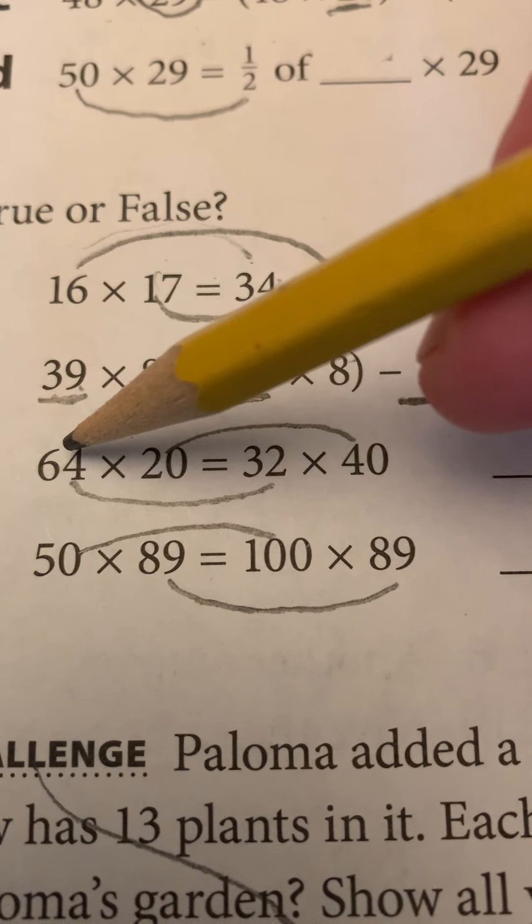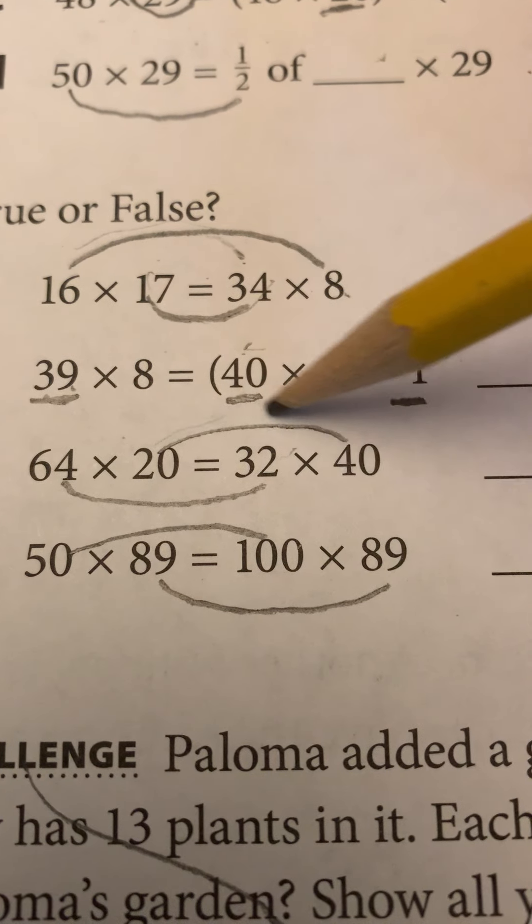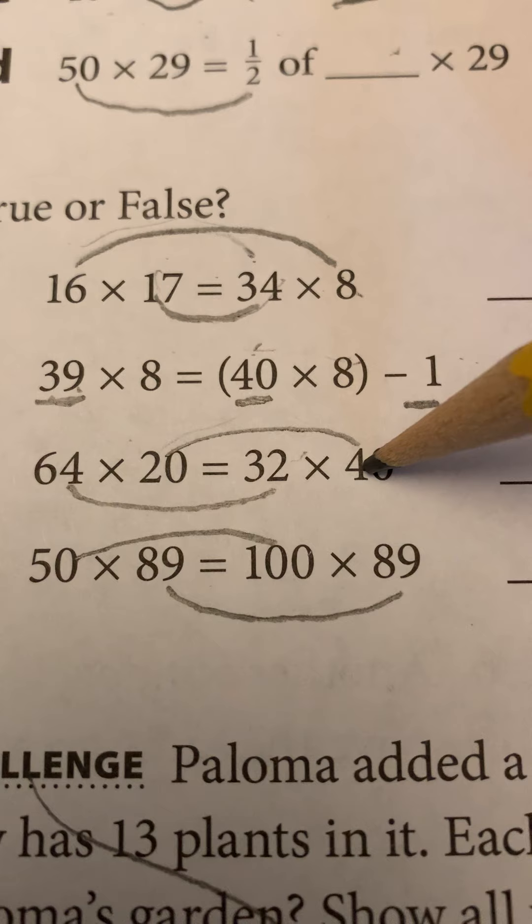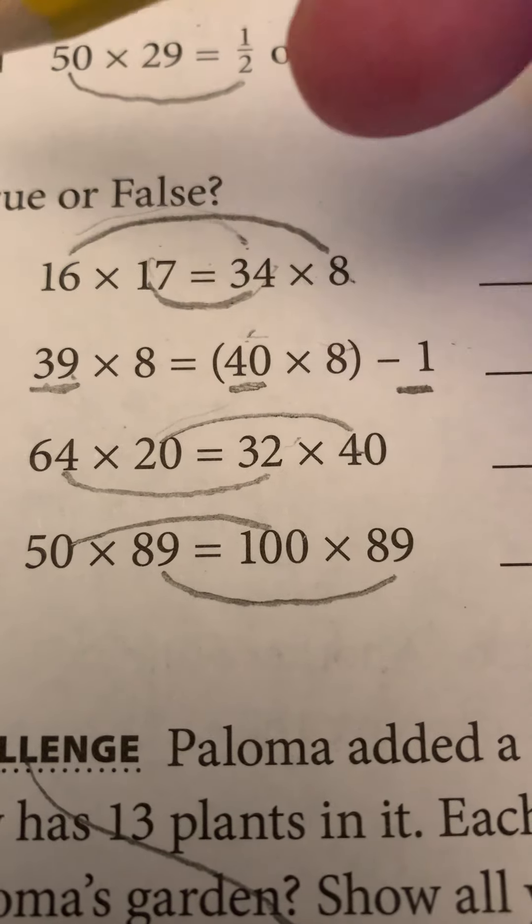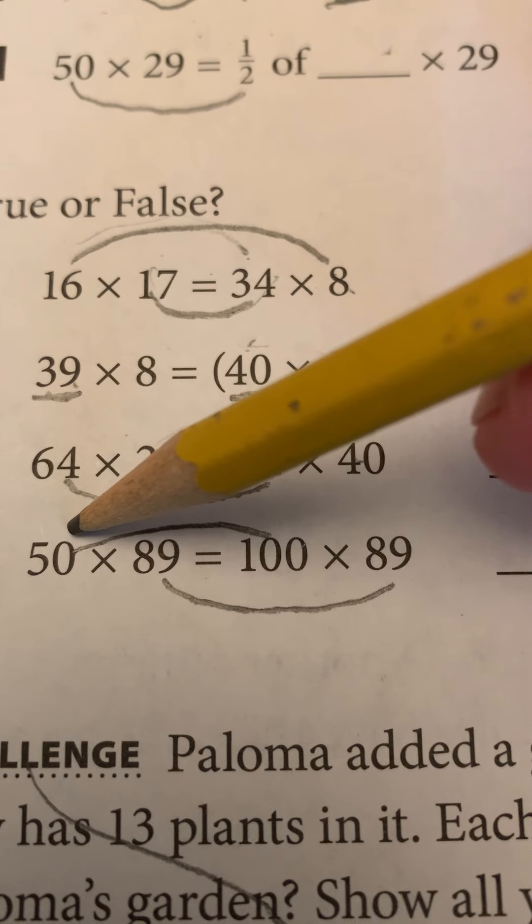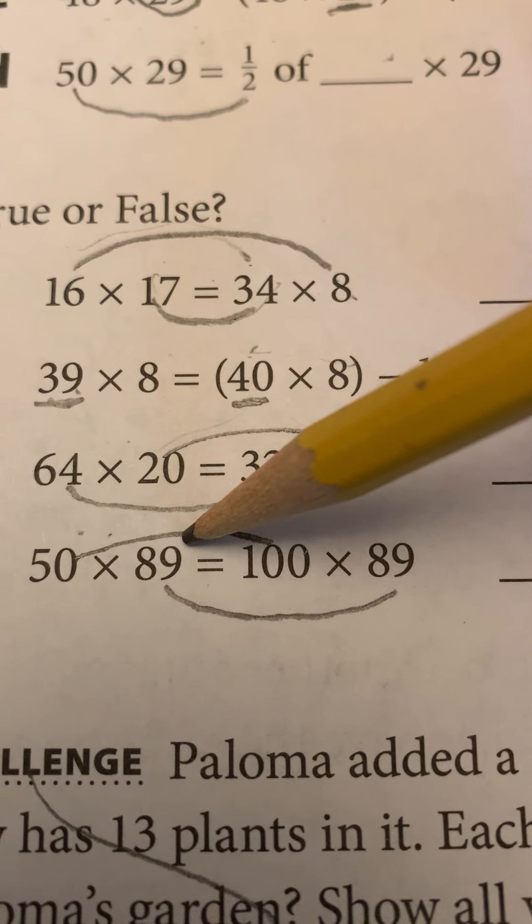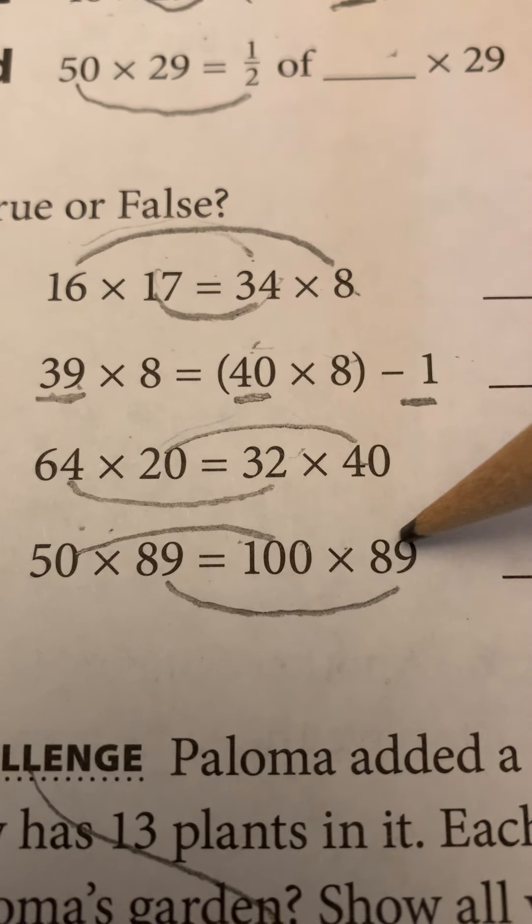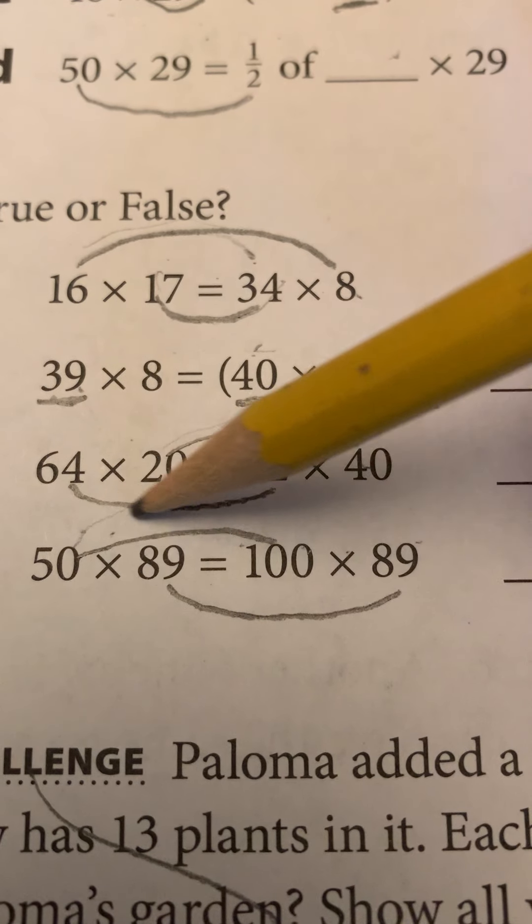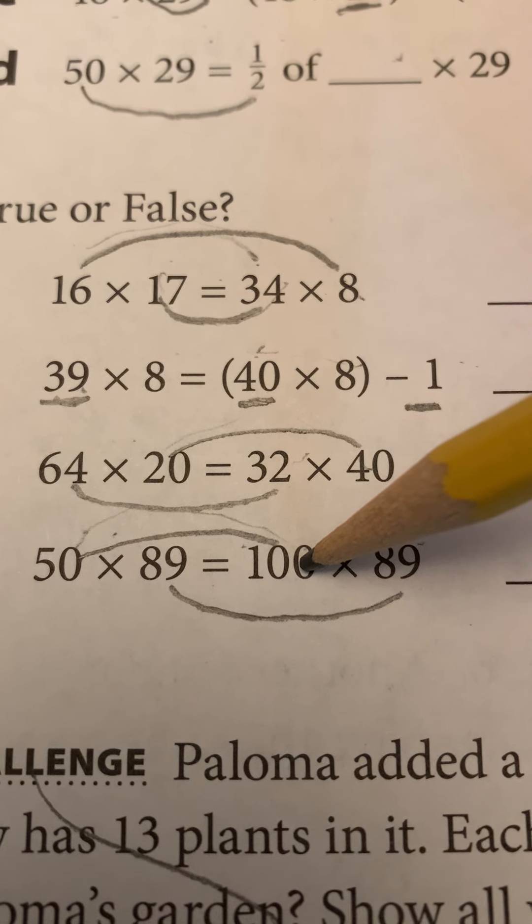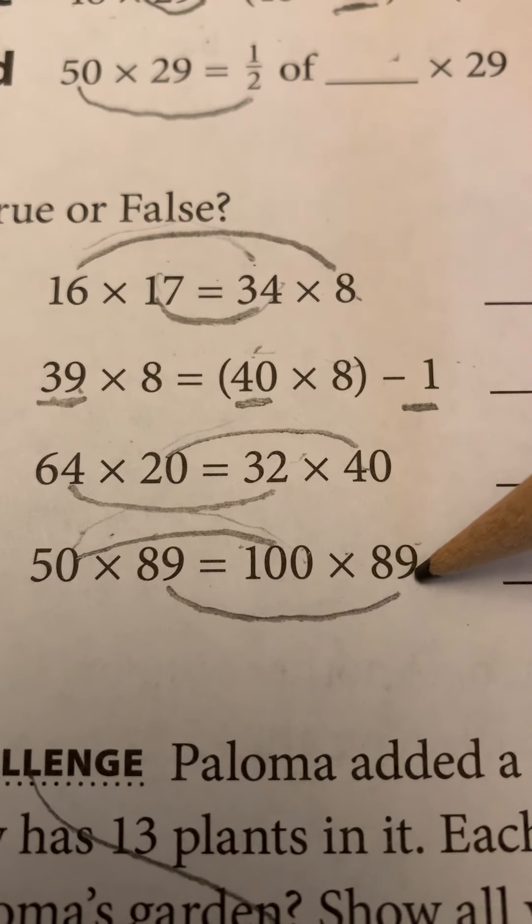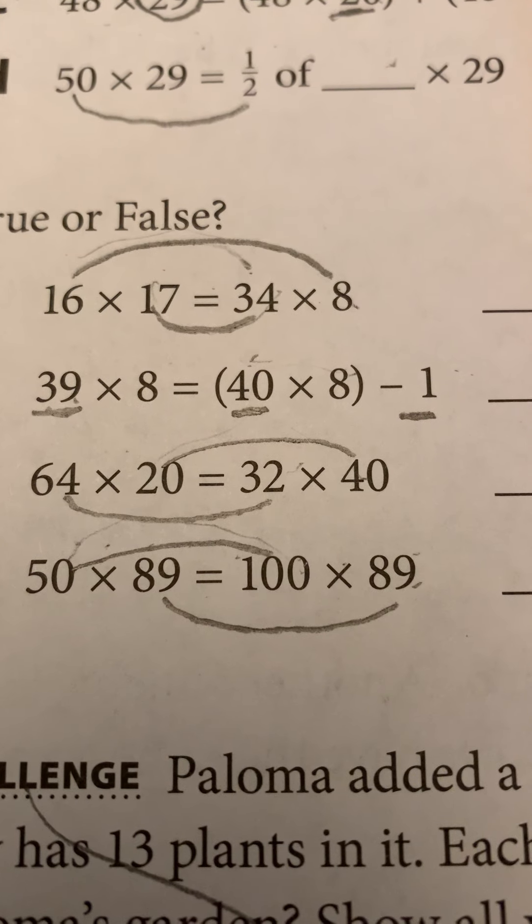64 times 20, I halved and I doubled. So are they equal or not? True or false? Last one. Listen, 50 times 89 equals 100 times 89. So if I doubled and I kept this the same, is it true or false?